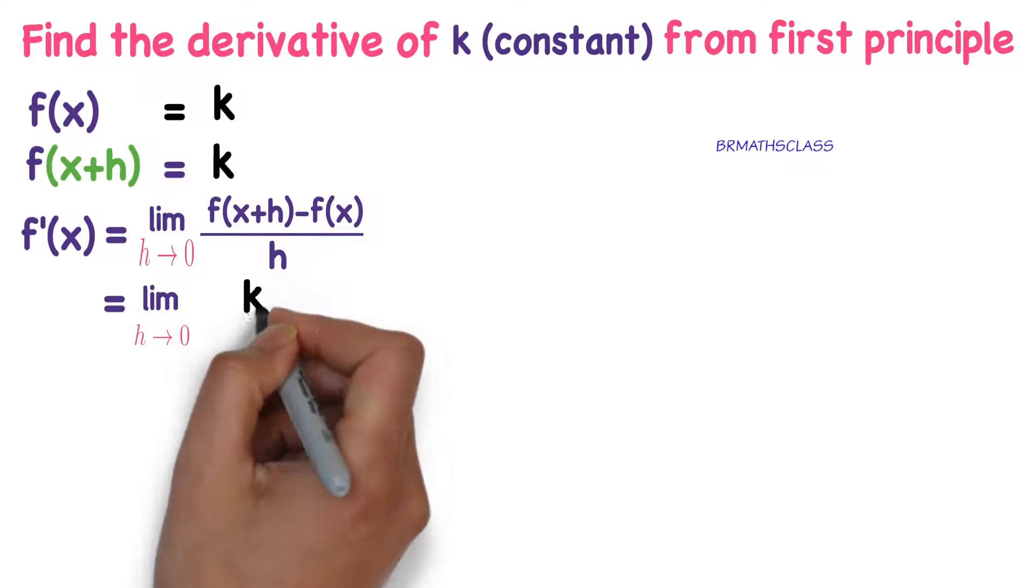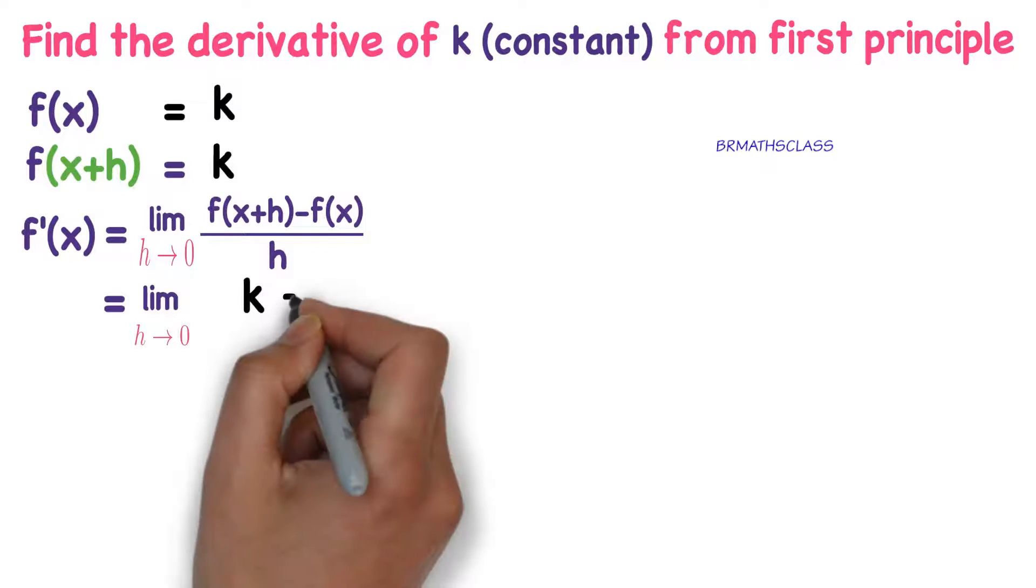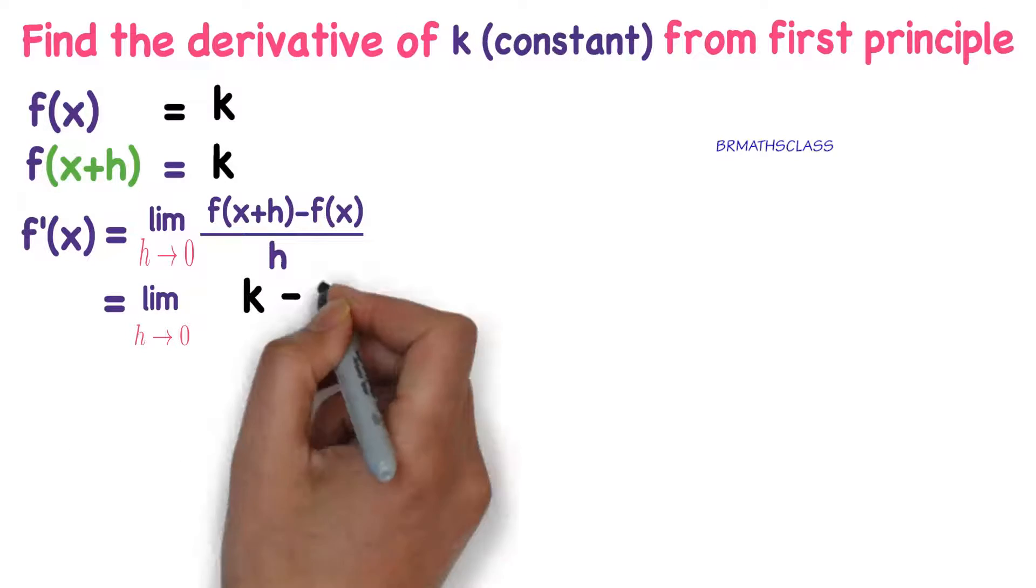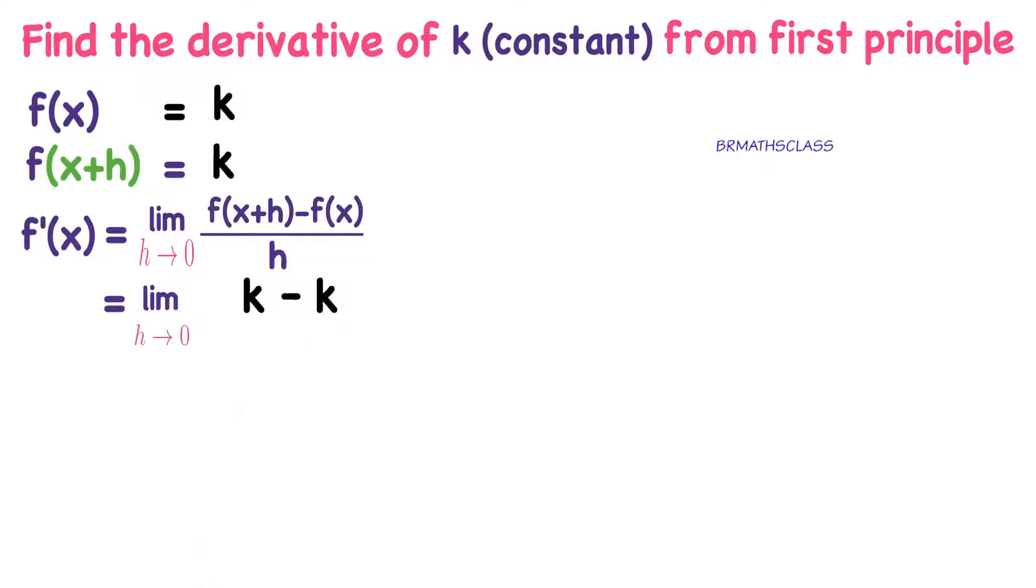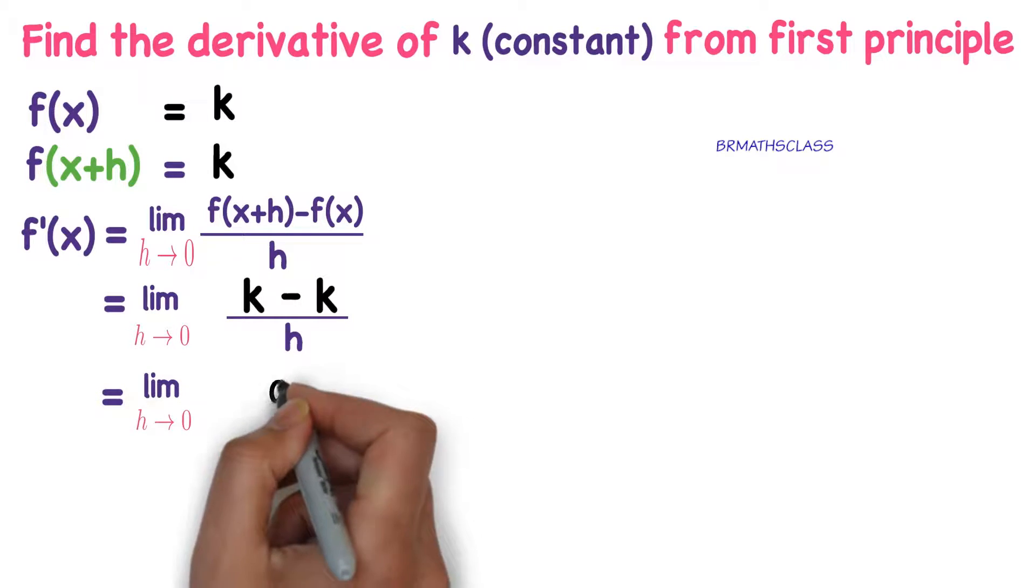Limit h tends to 0, f of x plus h is k, minus f of x, f of x is also k, divided by h. This equals limit h tends to 0, k minus k is 0, 0 divided by h.